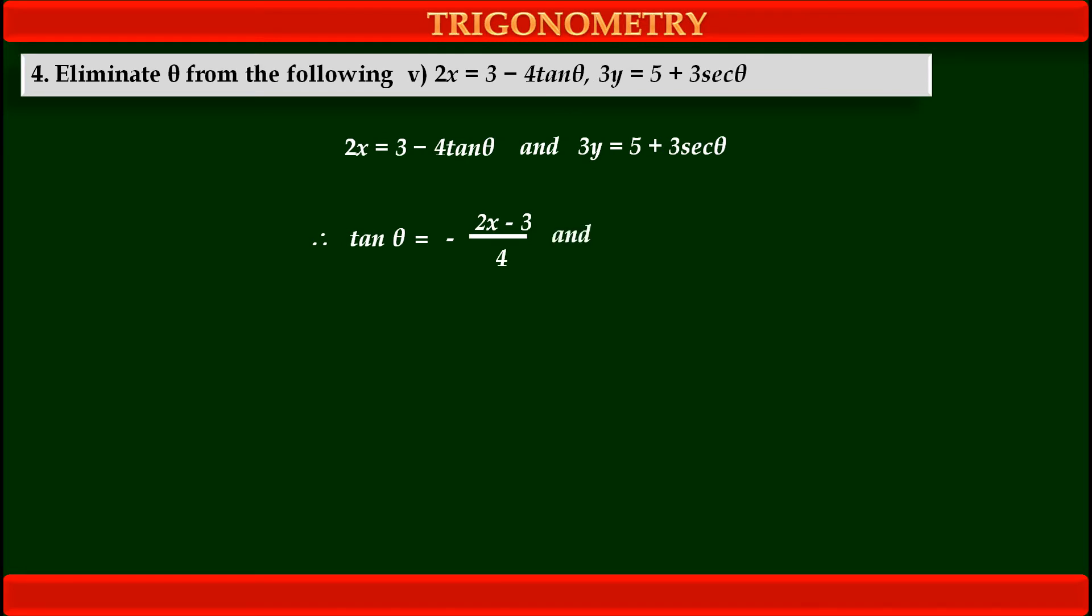And from second given equation, we get sec theta equals 3y minus 5 upon 3. See, here we have to shift plus 5 first term to the left hand side so it becomes minus, and then we have to divide both sides by 3. So sec theta equals 3y minus 5 upon 3.